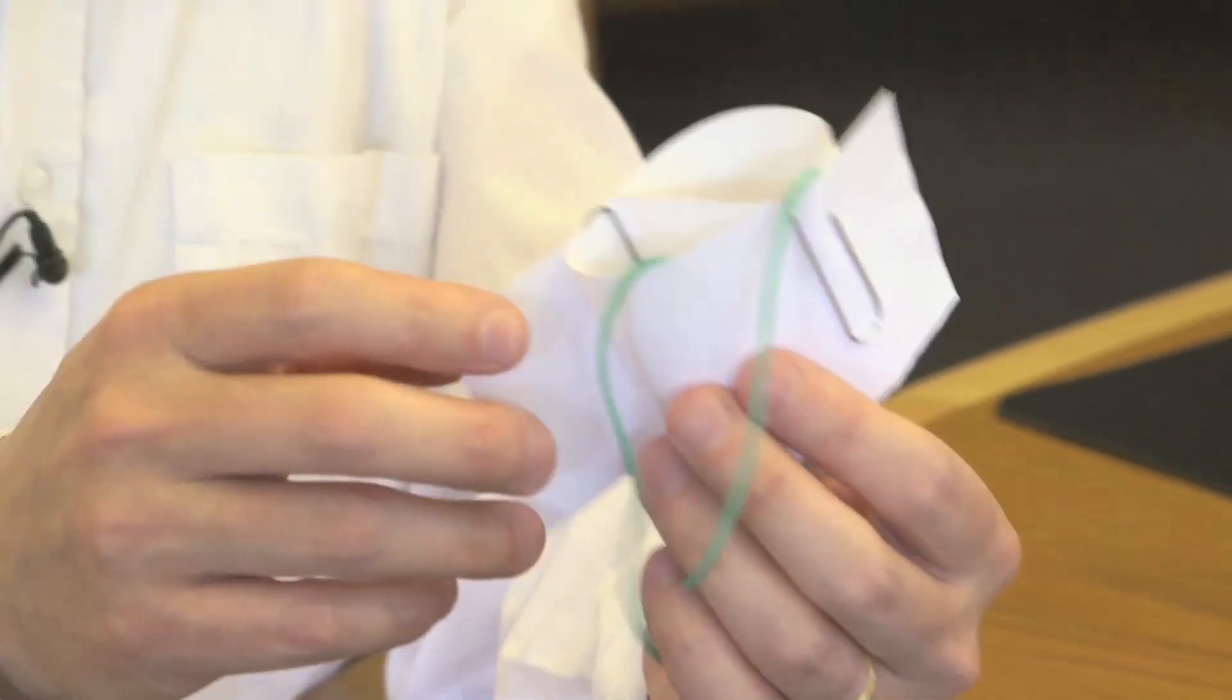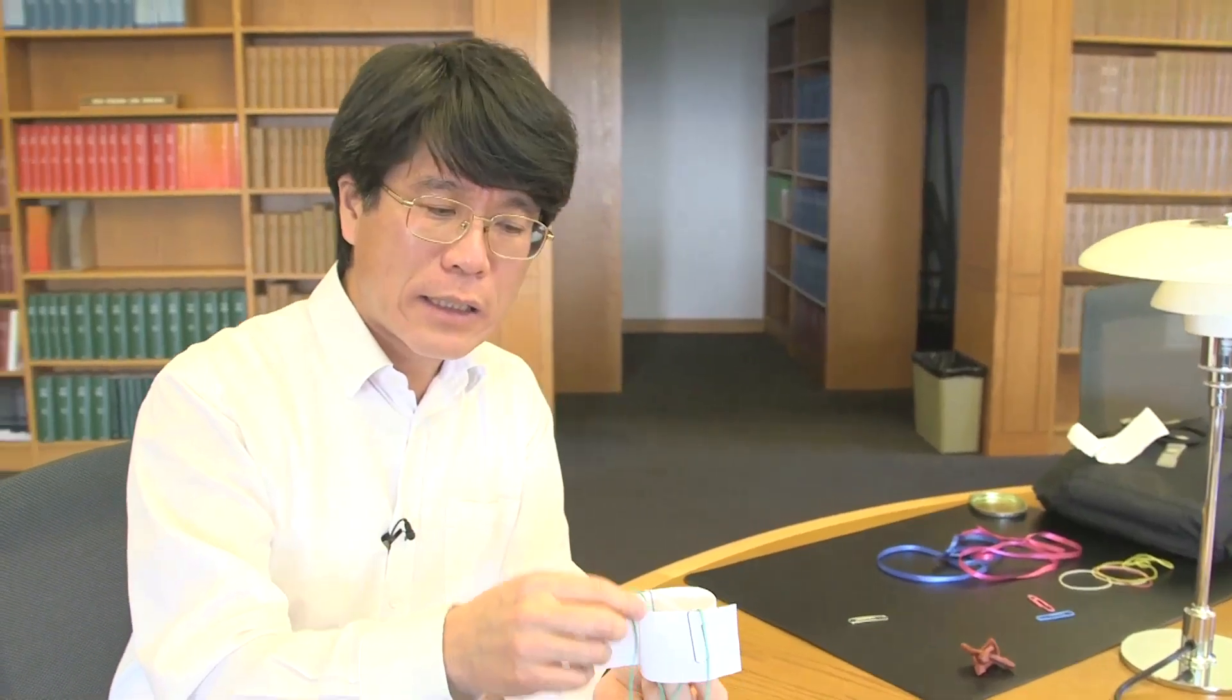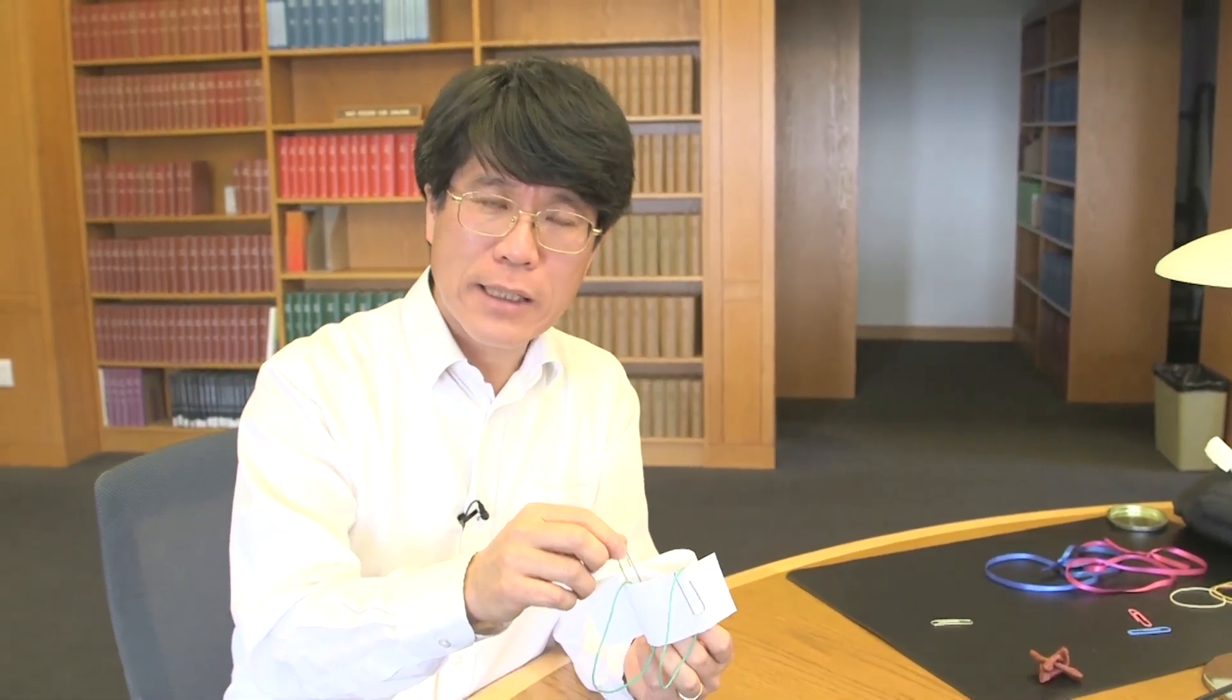Before we do that, however, let me debunk myself a little bit. The fact that in version number one, the rubber band stayed on the paper, and number two, the rubber band fell off the paper, is in fact no mystery. We can understand this.